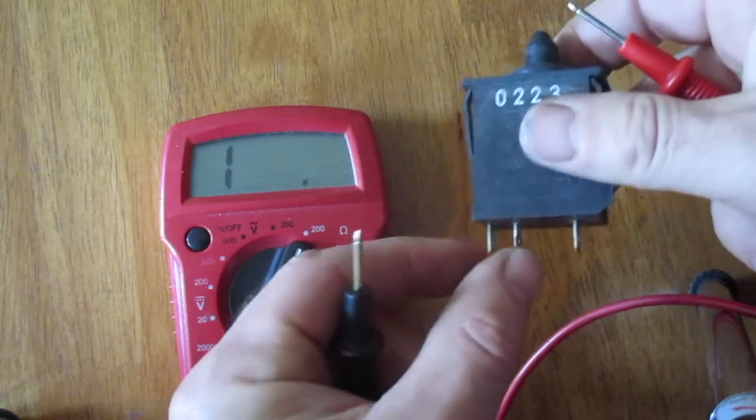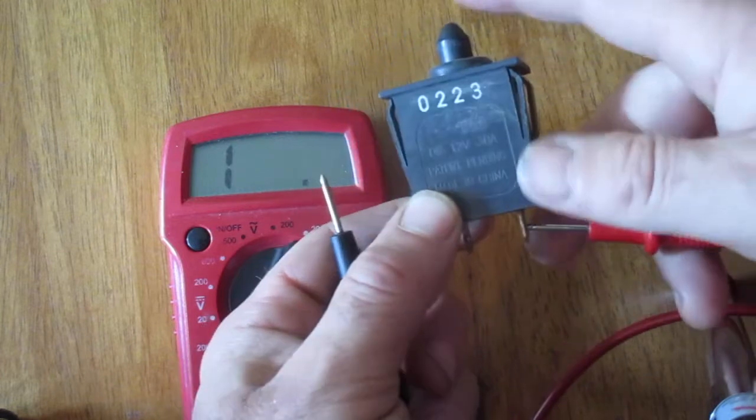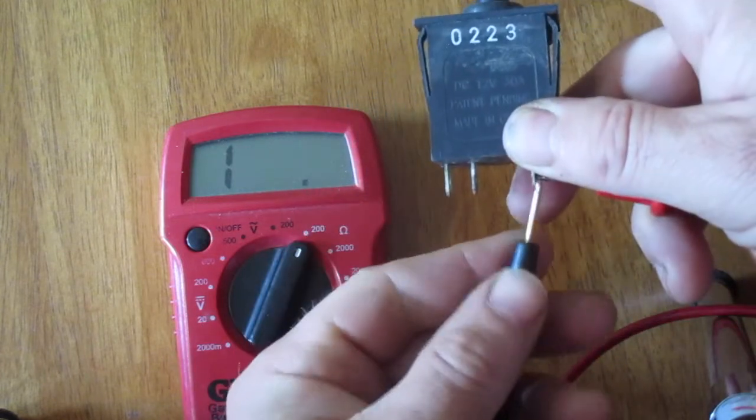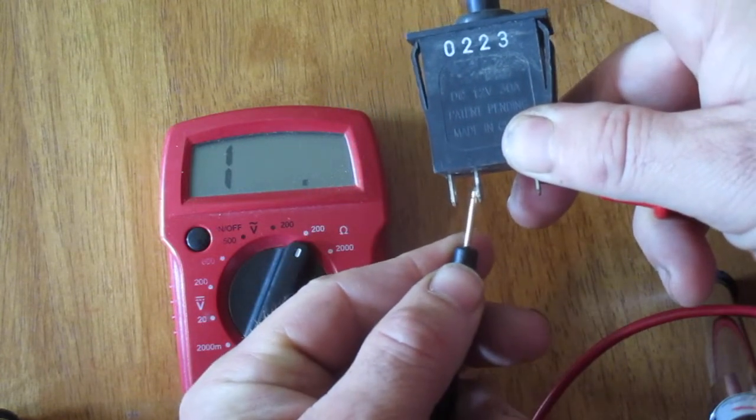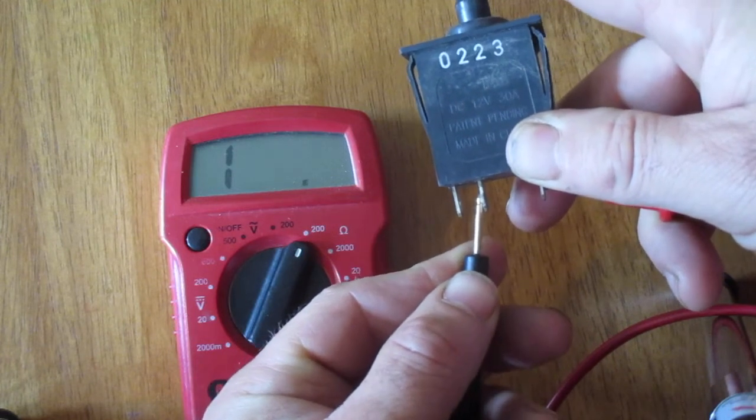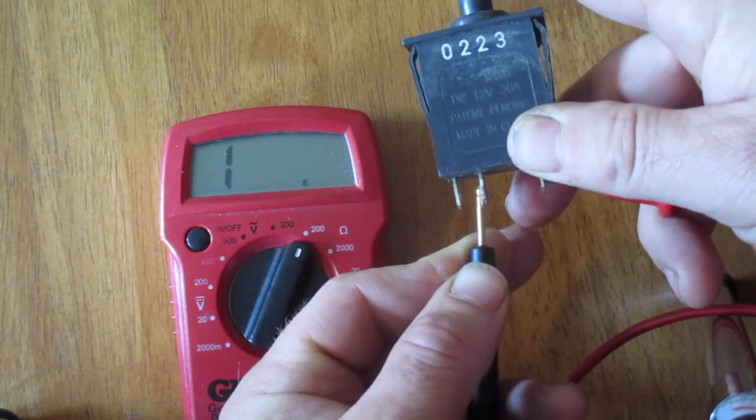So then after I've tested the two closest to each other, I'm going to test the two that are far apart from each other. I'm going to touch those leads and this is going to be the opposite. Nothing's happened here. I have no continuity.